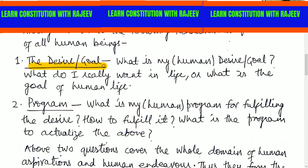The first question is: what do I really want in life, or what is the goal of human life? This is the most important question — the human being wants to know what the goal of life is. If someone wants to become or get something in life, they have questions in their mind. The second is program: what is my program for fulfilling the desire?